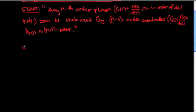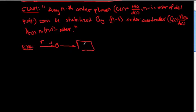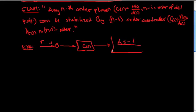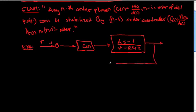So let us look at the example: given the reference plus/minus, design the controller C(s) for the following plant. The plant is (4s − 1) divided by (s² − 8s + 2). This plant is obviously unstable because we have the coefficient minus 8 here.